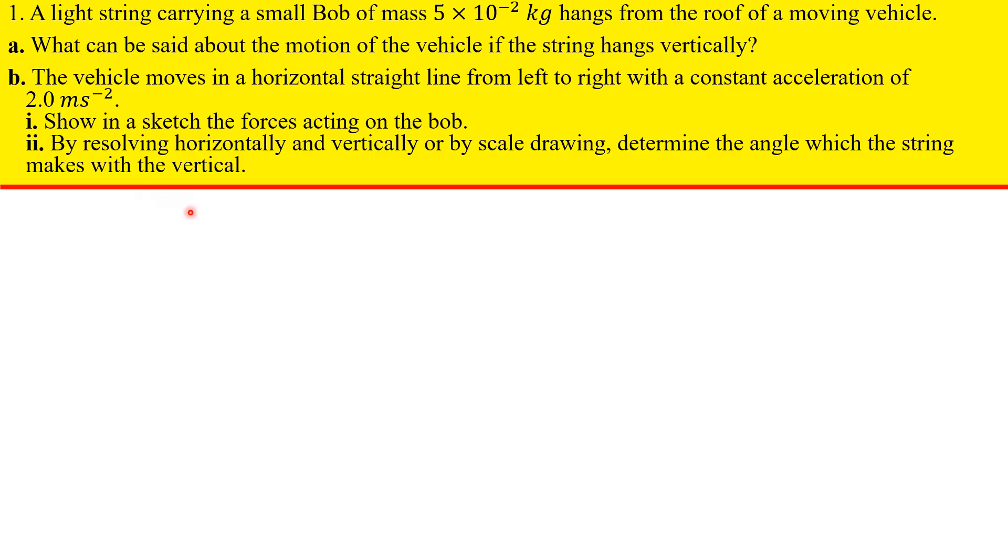A light string carrying a small bob of mass hangs from the roof of a moving vehicle. What can be said about the motion of the vehicle if the string hangs vertically? Well, if a hanging string still hangs vertically, then that tells you that the resulting force on that system is zero and so the system is not accelerating. The car must be moving with a constant velocity or constant speed in a straight line.